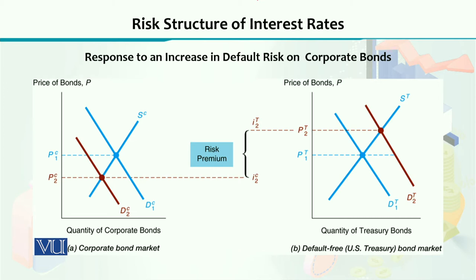Right now on the screen you can see two diagrams. On the left side, you can see Panel A, which shows the demand and supply curves for the corporate bond market. On the right side, you can see the treasury bonds market with its demand and supply curves drawn. Initially, the blue demand curve and the blue supply curve show the equilibrium price level, which can be observed as P1C.